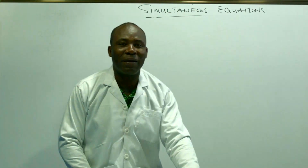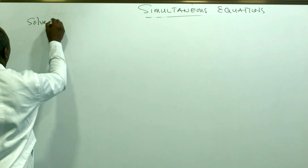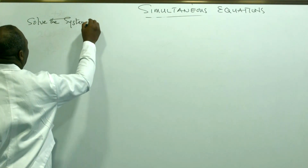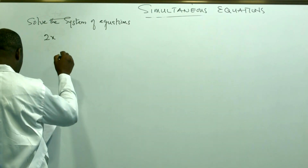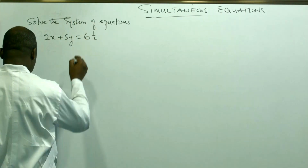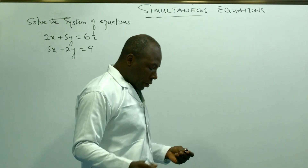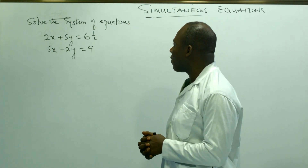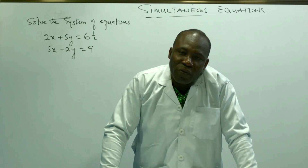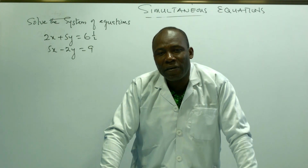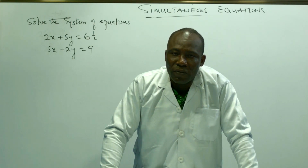Let's continue with another example. Solve the system of equations: 2x plus 5y equals 6 and one half, and 5x minus 2y equals 9. Looking at the first equation, it contains a mixed fraction. That means the first thing for us to do is to remove the mixed fraction and convert it to an improper fraction. We cannot start solving this without doing those basic things.